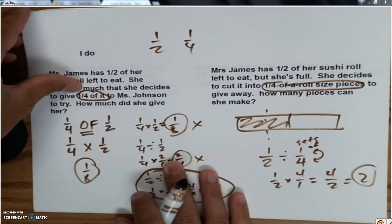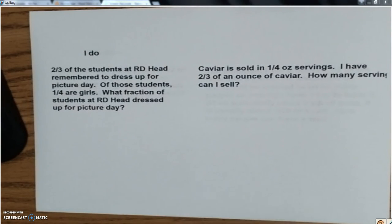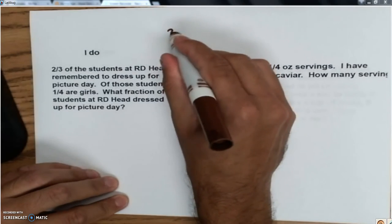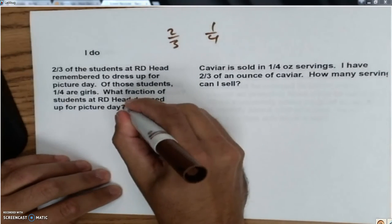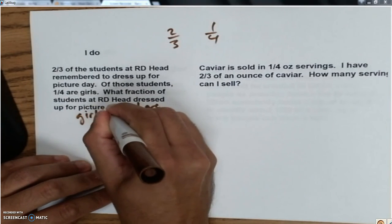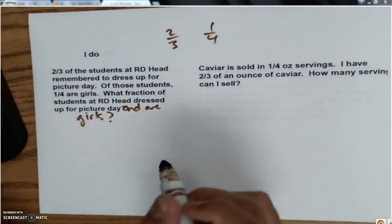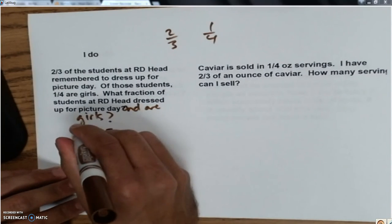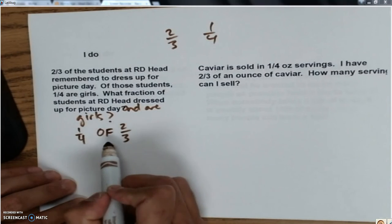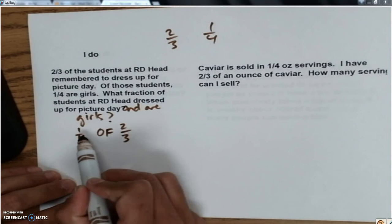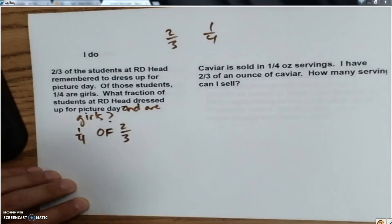I'm going to do another one just to keep thinking through those ideas before you write one down. This is going to involve the fractions 2/3 and 1/4. So the first one: 2/3 of the students at RD Head remembered to dress up for picture day. Of those students, 1/4 of those are girls. What fraction of students already had dressed up for picture day and are girls? Here's the thing again - I've got an 'of' situation. 1/4 of the 2/3 of students dressed up. 2/3 dressed up, 1/4 of them are girls. So I'm looking for 1/4 of 2/3 to know my whole situation.